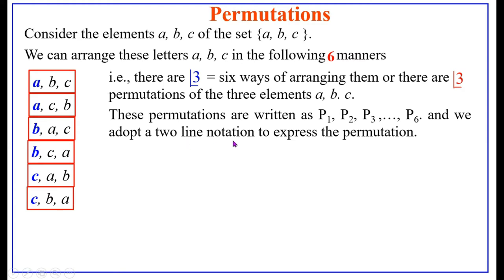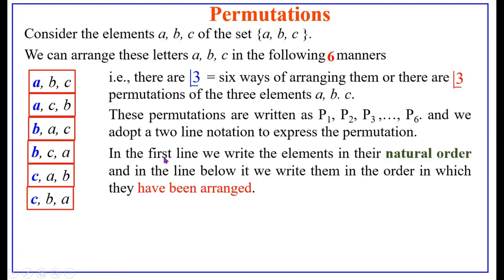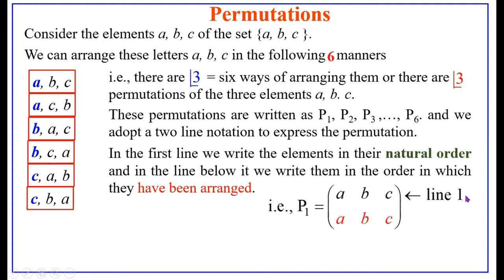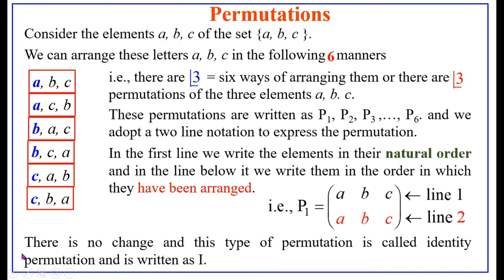We adopt a two-line notation to express the permutation. In the first line we write the elements in their natural order, that is a, b, c. In the line below, we write them in the order in which they have been arranged. So p1 equals: first line a b c, second line a b c — the given order is unchanged. There must be at least three to four characters gap between any two letters in the notation.